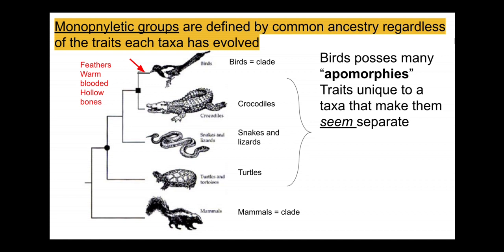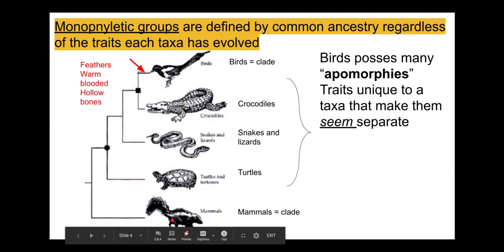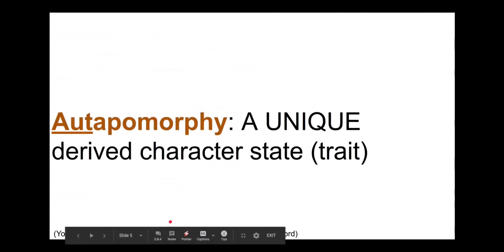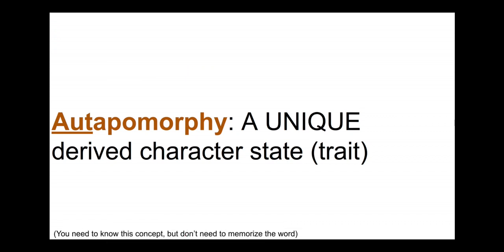Birds have feathers, are warm-blooded, and have hollow bones — these make them seem unique. These are all autapomorphies, characteristics unique just to their group. If we focus on these unique features they make us want to isolate birds, but if we look at morphological and genetic similarities they show us that birds are unified with crocodiles and other reptiles.